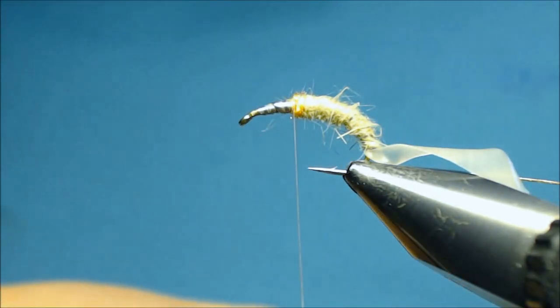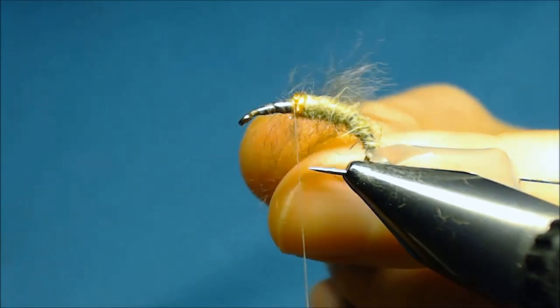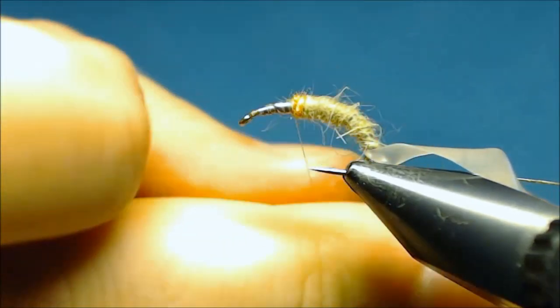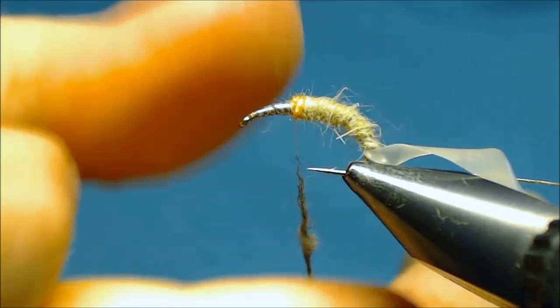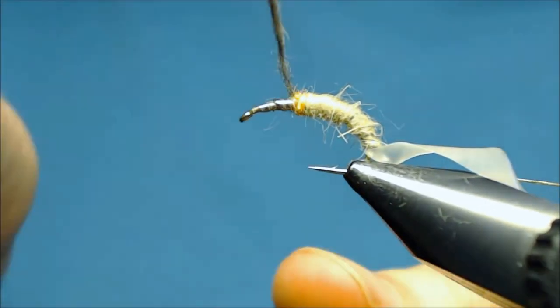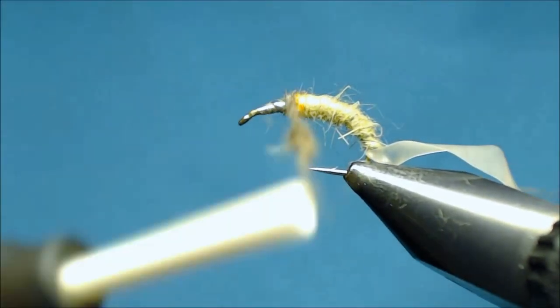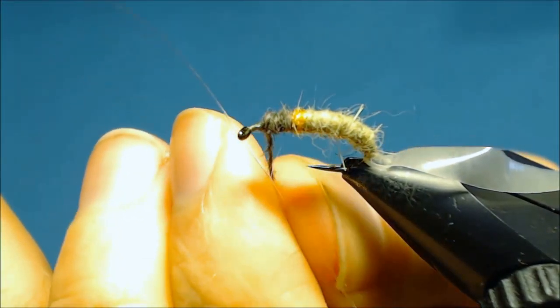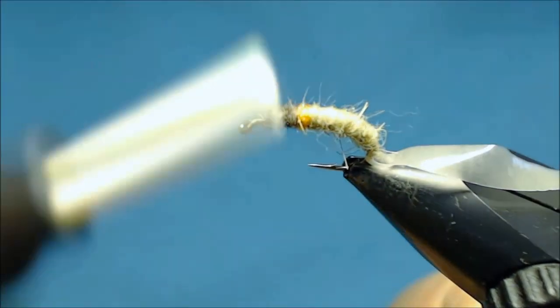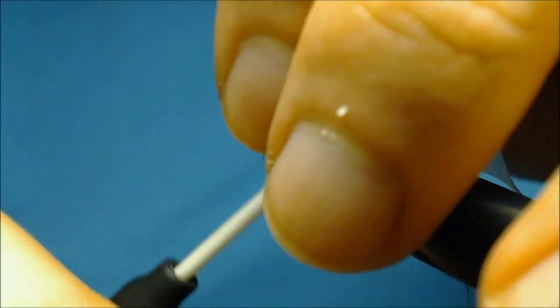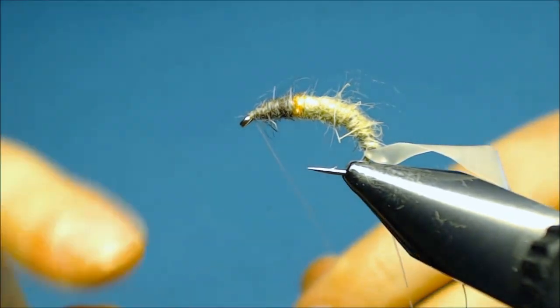Then the last material for the body is some dubbing for the thorax. And for this I'll use some natural hare mask. And the more guard hairs you have the better it is. So just build up the thorax, tapering it down to the eye of the hook. And now just a half hitch to make sure that the thread will stay in place.